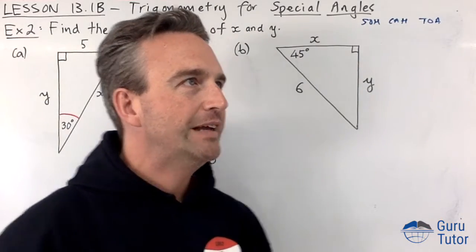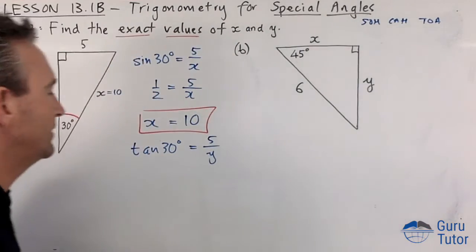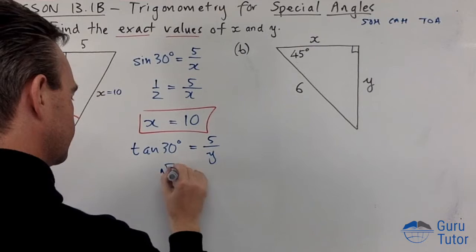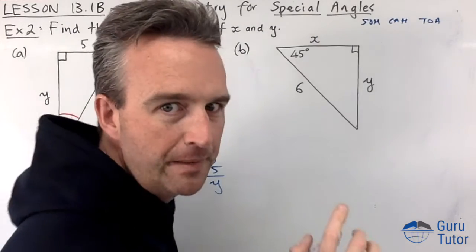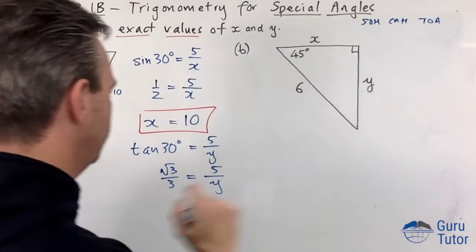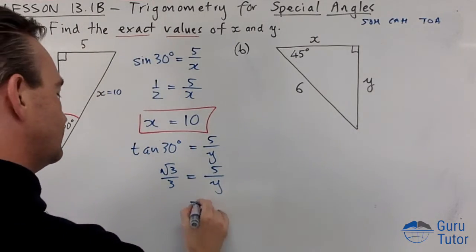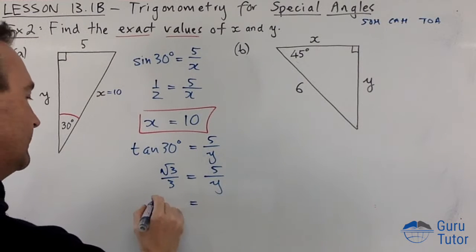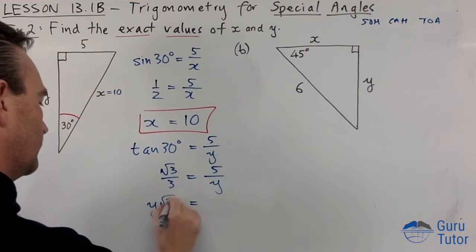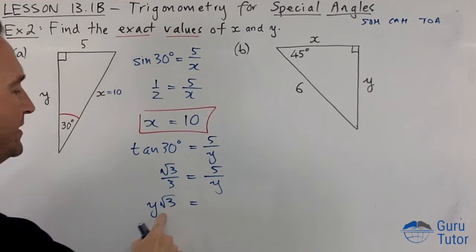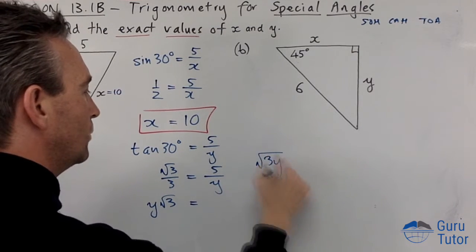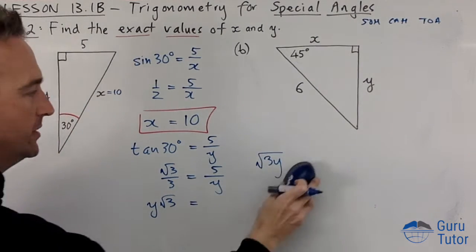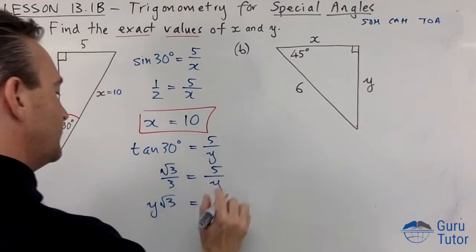Tan 30 is root 3 over 3. I actually did memorize that, I did know that. And we cross multiply again. Y times root 3, y root 3 - I always say y root 3 instead of root 3y because you don't want to get confused with the y being inside the square root. Usually put the y first. 3 times 5 is 15.